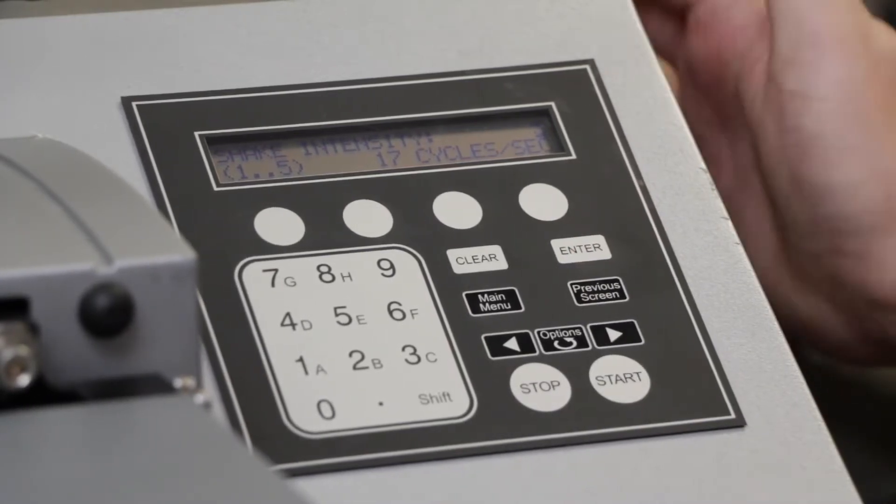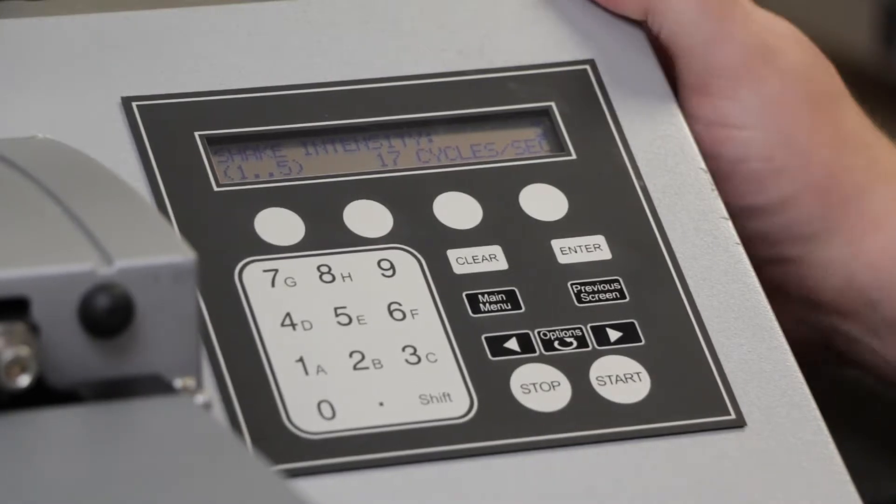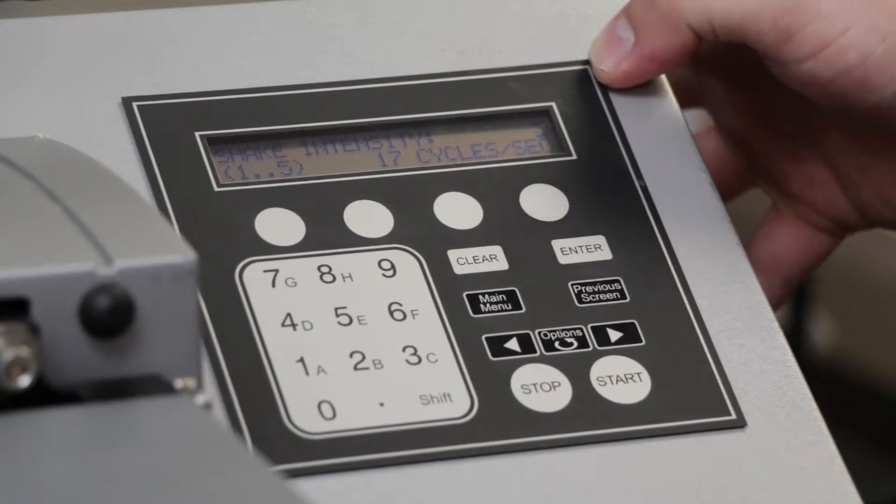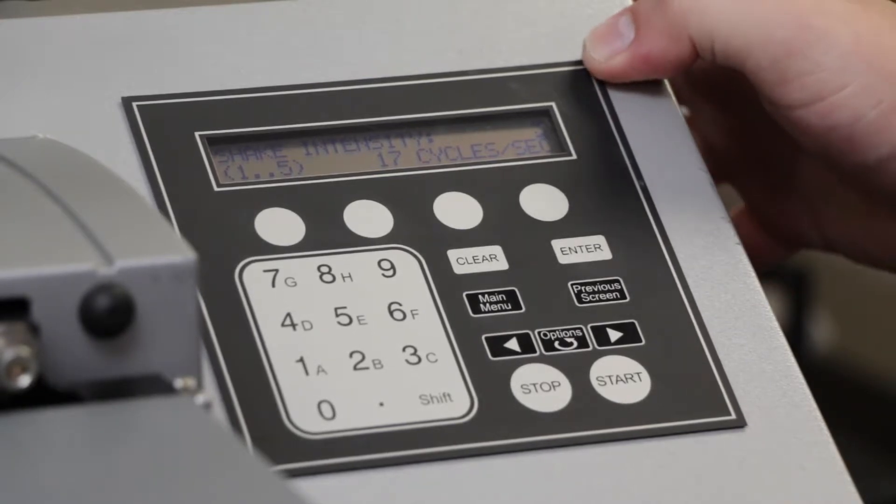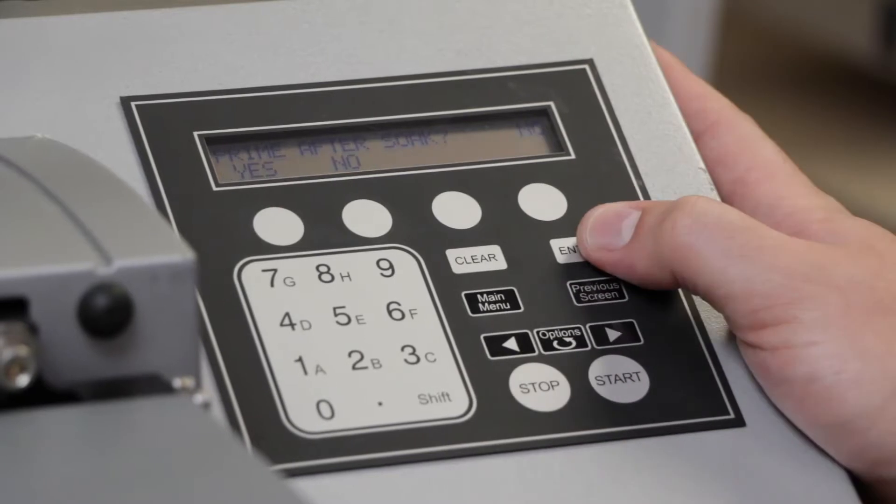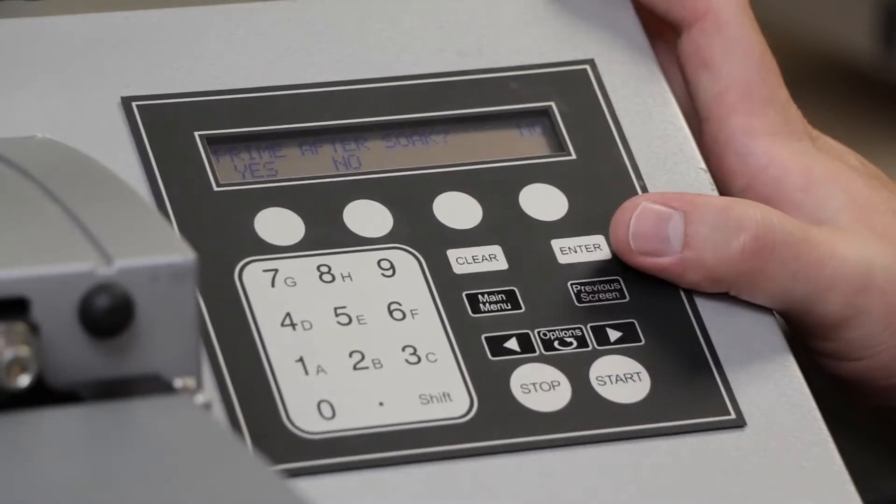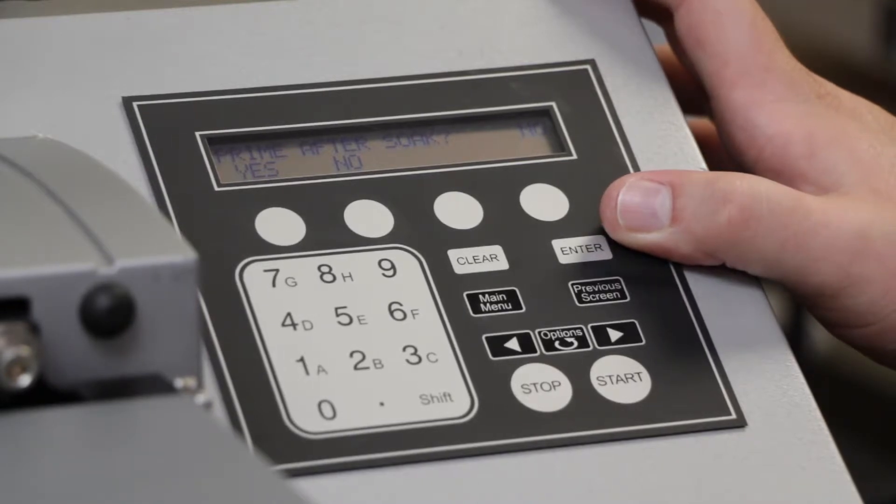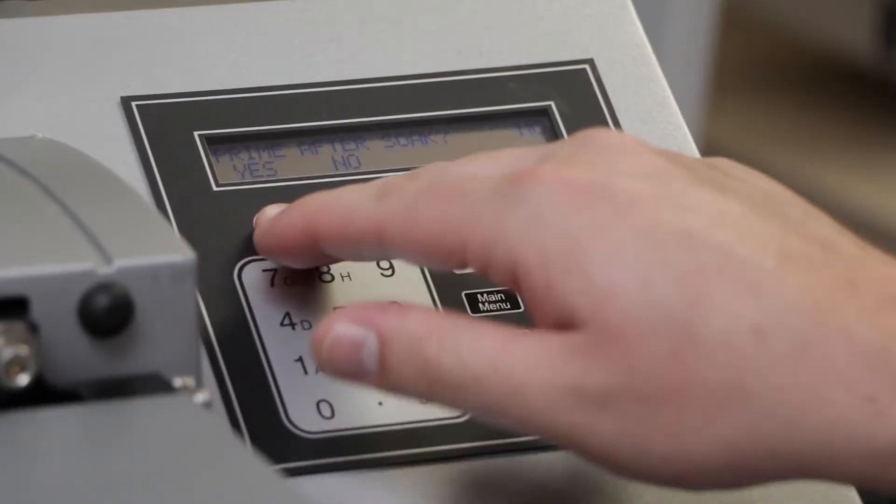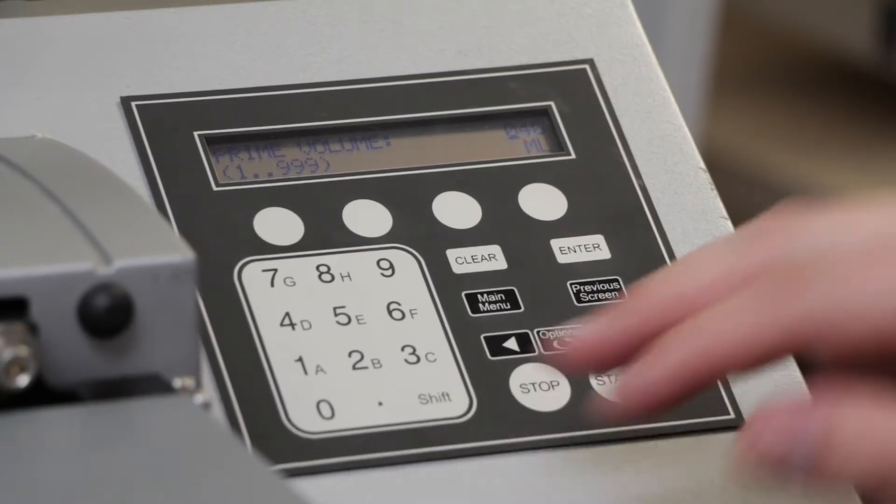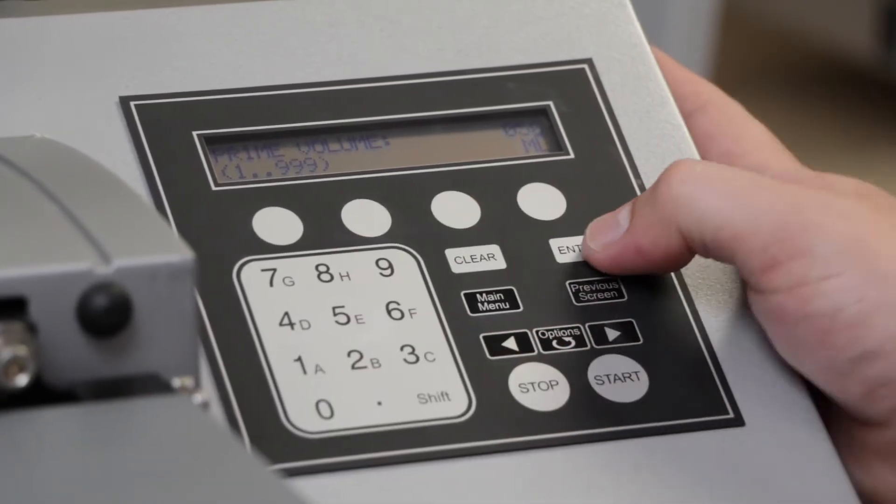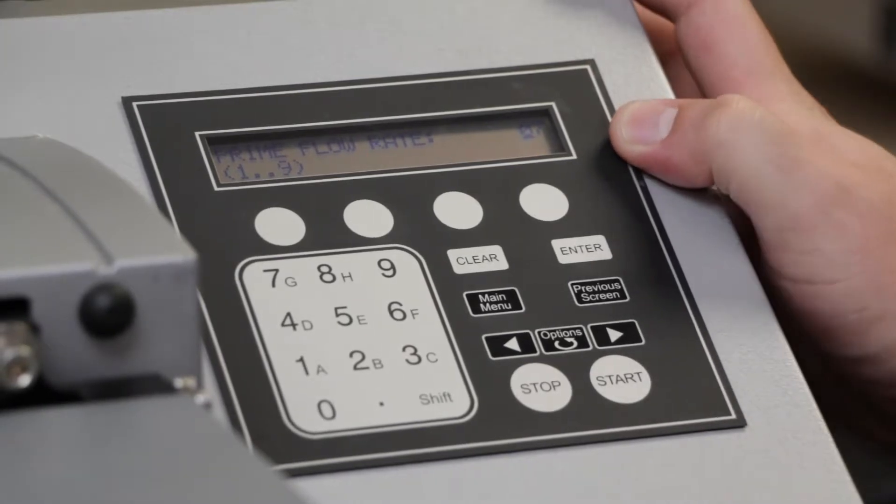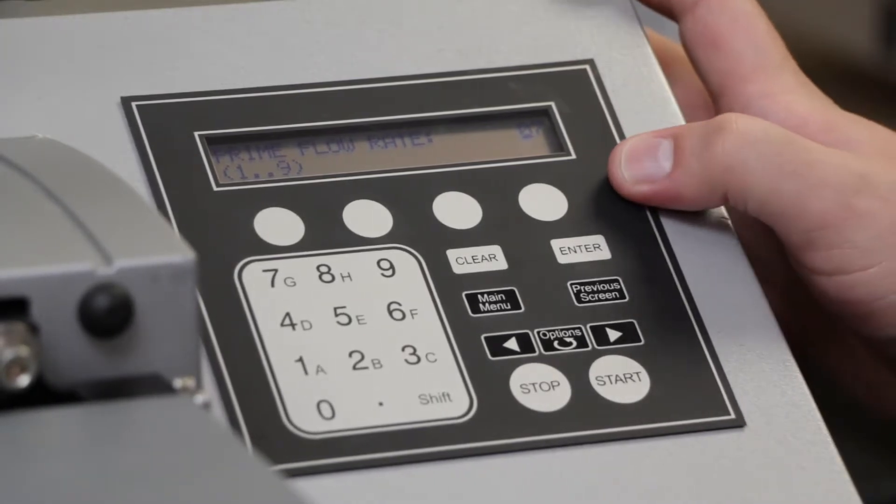Shake intensity is self-explanatory. How intense of a shake do we want? I recommend keeping it in the middle, the default at three, as higher volumes and intensities have the potential for spillage. Priming after a soak is useful for if you want to make sure that you've got plenty of fluid within the pumps and the manifold itself. So we'll select Yes, and we'll add, say, a 50 milliliter prime. You'll also be prompted with a prime flow rate, and this can be left at the default value.